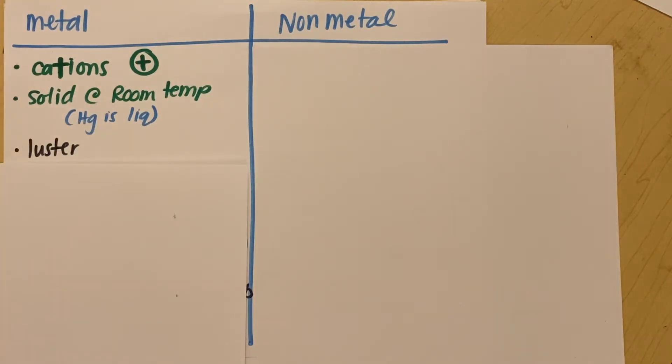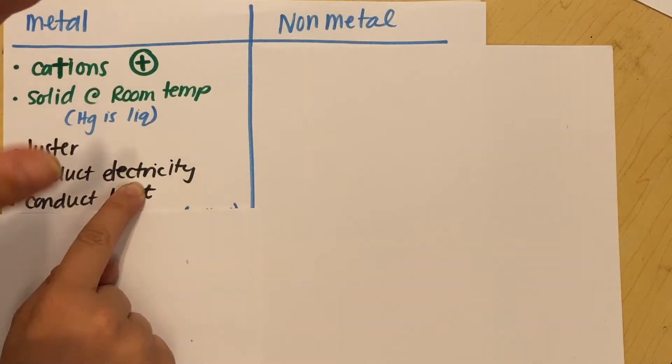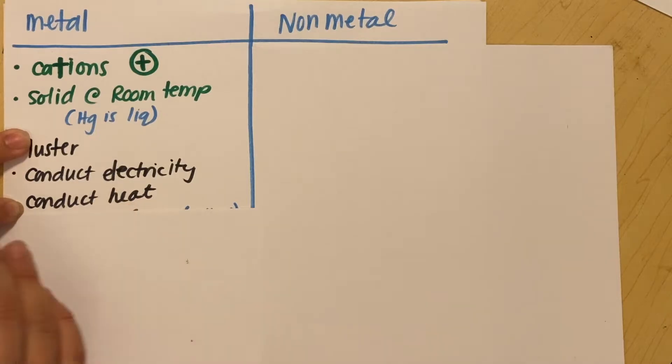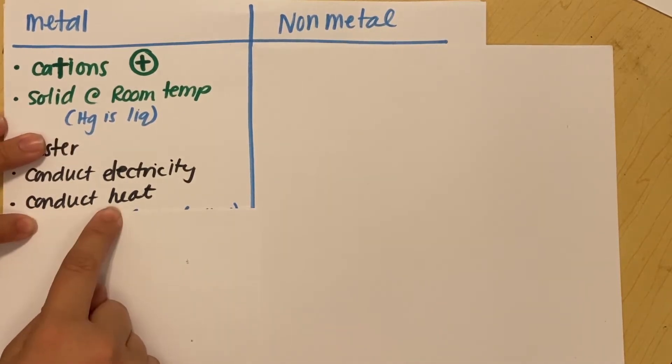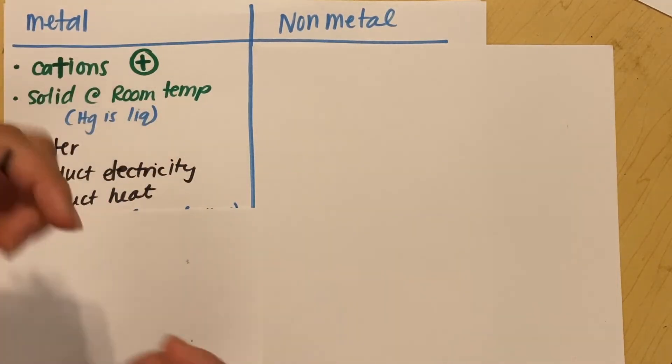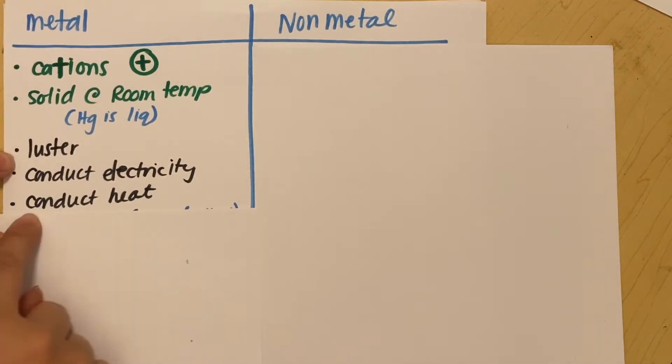All right. They have high luster, which means they're shiny. Which is, of course, something that we know about metals. One of the reasons that we use them for jewelry. They can conduct electricity and conduct heat. So conducting electricity, if you flip on the switch to turn on the lights, what happens is electricity is going to flow through copper wire. Typically copper. Right? Copper is a metal. Electricity is going to flow through metal. It's not going to flow through air. And conducting heat. That means that it's able to have heat pass through it very easily.